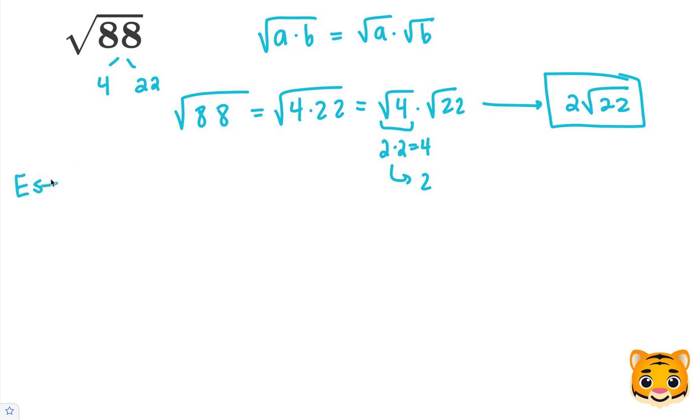Now, to estimate the value of the square root of 88, we can look for perfect squares nearby. 9 squared gives us 81, and 10 squared gives us 100. We can see that 88 lies between 81 and 100.